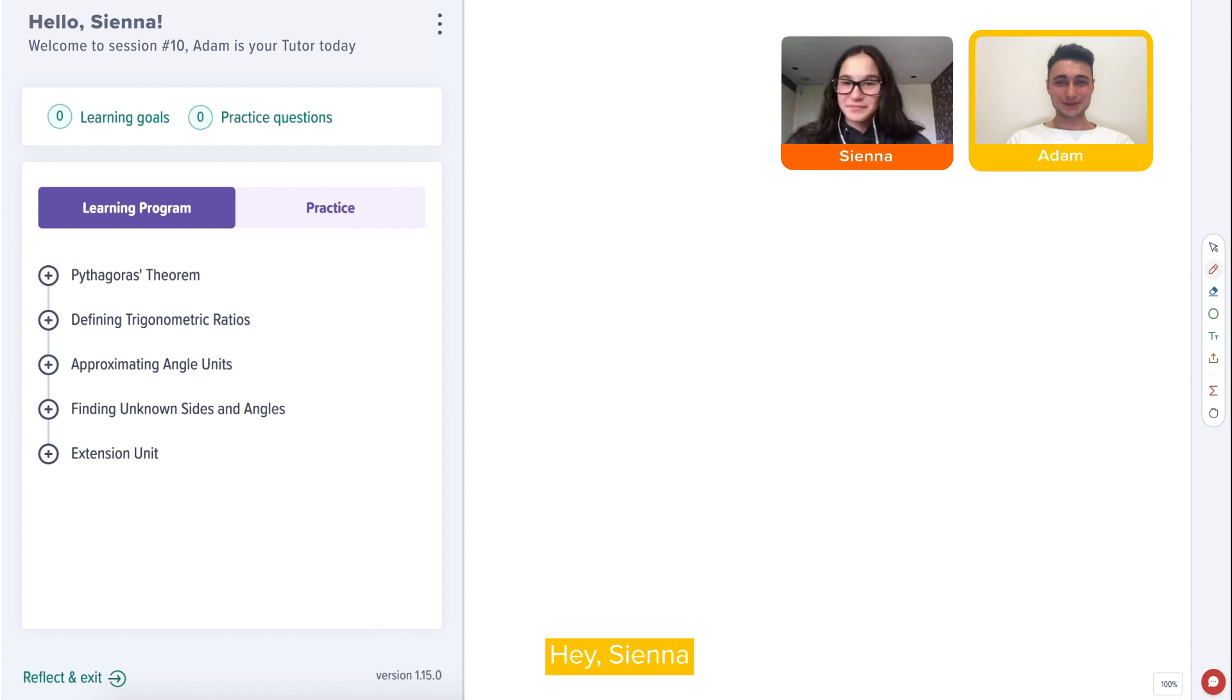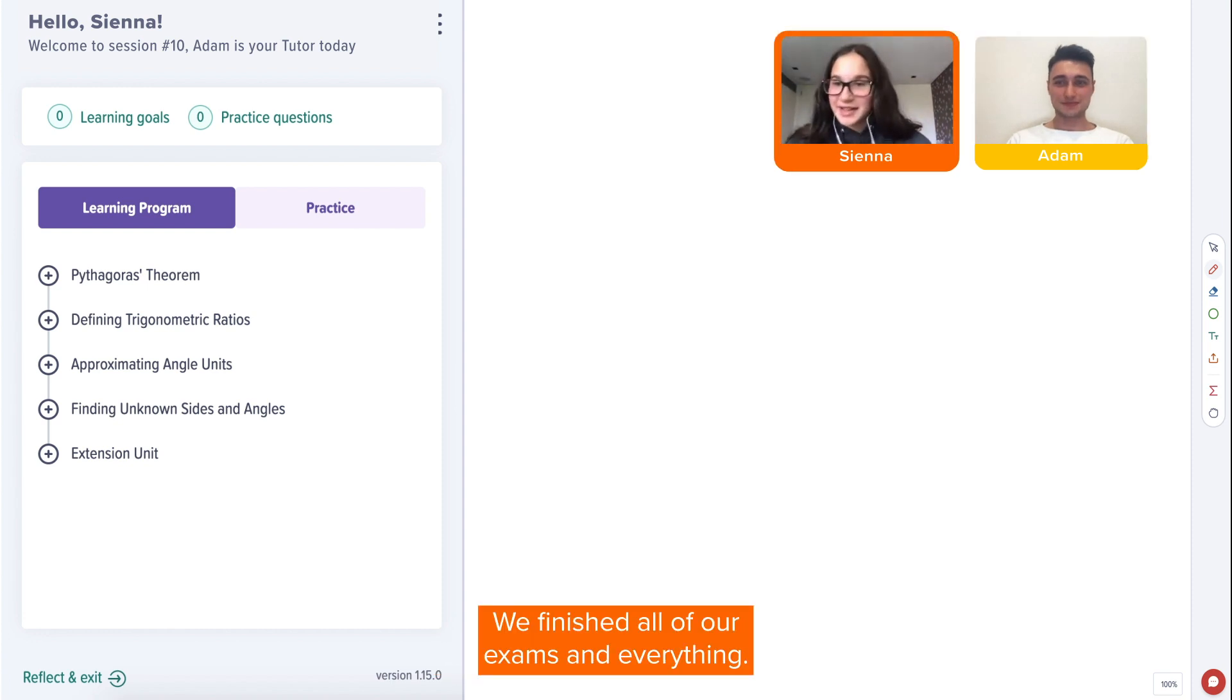Hi. Hey Sienna. Cool, what's been happening? We finished all our exams and everything. How was it all? I actually did pretty well in math. I got 87 so I'm very happy.